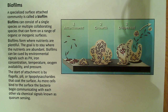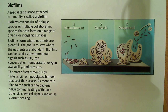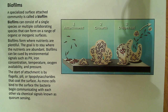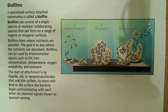In order to start the attachment, it's usually initiated by specialized structures such as flagella, pili, or lipopolysaccharides — lipopolysaccharides are found in gram-negative bacteria. They coat the surface, putting that initial coat down. That allows other bacteria to attach to that coat, and eventually more and more cells bind to the other bacteria.